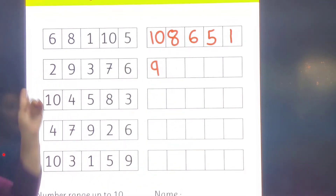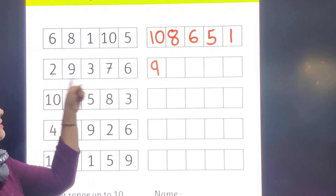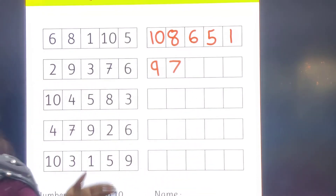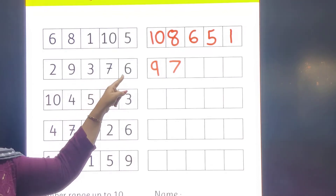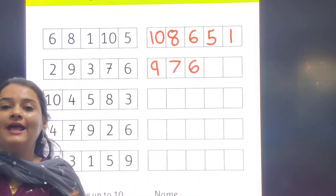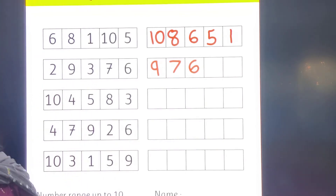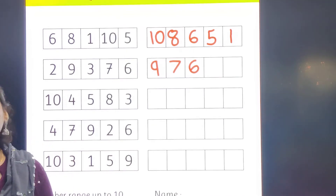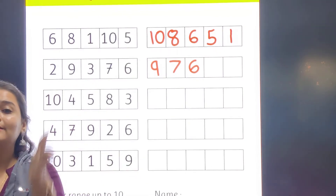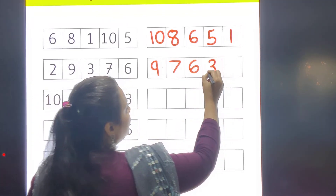Then 8 — is 8 here? No. Then 7 — is 7 here? Yes, number 7 is here, so I will write number 7. Then 6 — is 6 here? Yes, so I will write number 6. Then 5 — is 5 here? No, number 5 is not there. Then 4 — is 4 here? No. Then 3 — is 3 here? Yes, 3 is here, so I will write 3 in the next block.